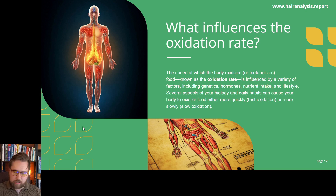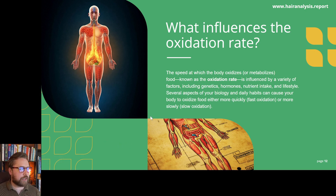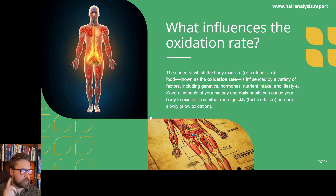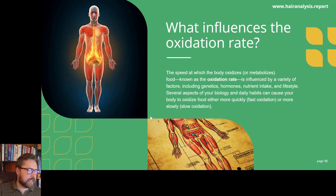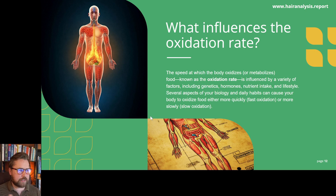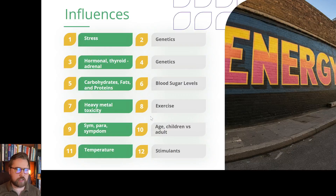Let's look at some of the things that influence the oxidation rate. The speed at which the body oxidizes or metabolizes food — known as oxidation rate — is influenced by a variety of factors including genetics, hormones, nutrient intake and lifestyle. Several aspects of your biology and daily habits can cause your body to oxidize food more quickly (fast oxidation) or more slowly (slow oxidation). Some of the things that influence this include stress.